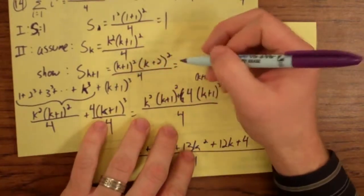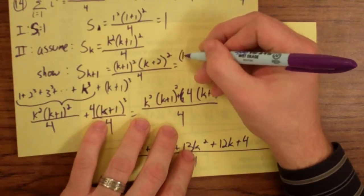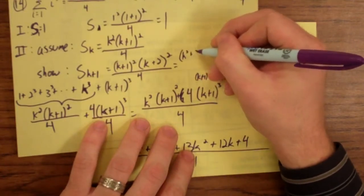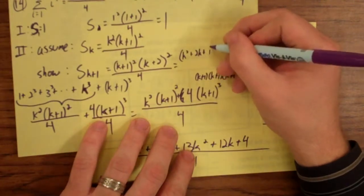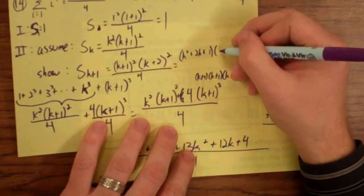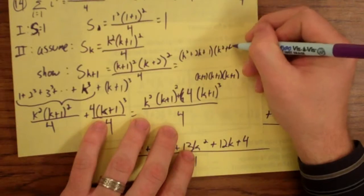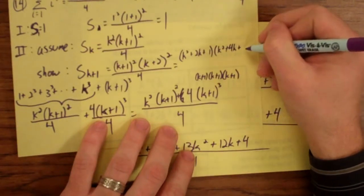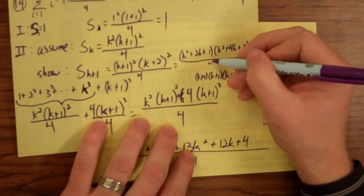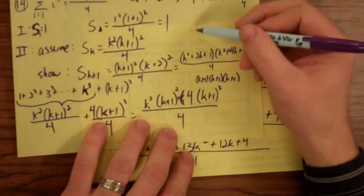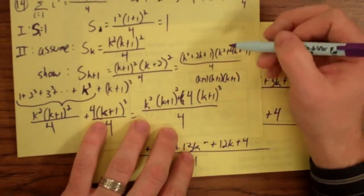So let's FOIL this one. This is, remember, we're going to multiply these two things together, so this first one is k squared plus 2k plus 1. And this is k squared plus 4k plus 4. This is all over 4.